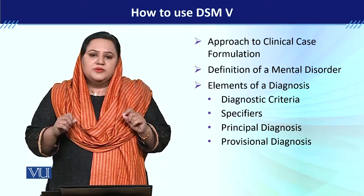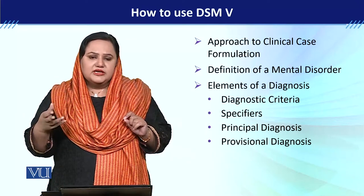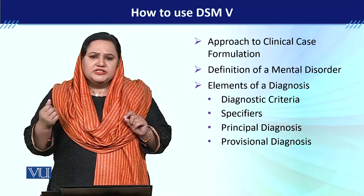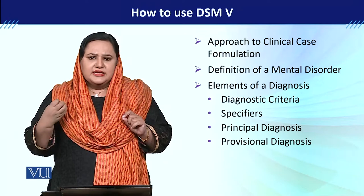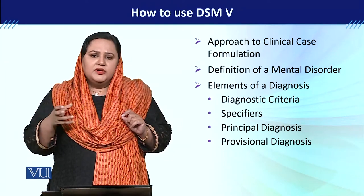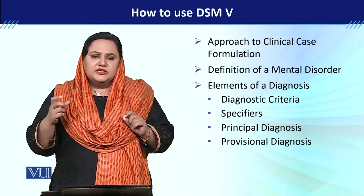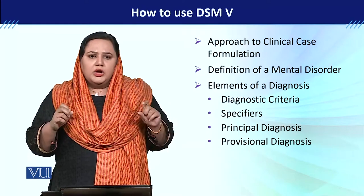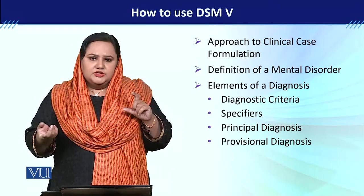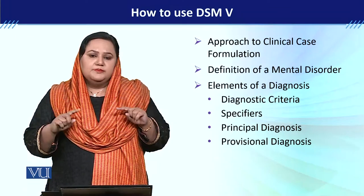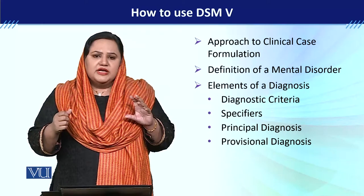Principal diagnosis refers to the main symptoms a child is exhibiting when they come to you. For example, if they are showing depression symptoms — loss of interest, hopelessness, sadness, lack of pleasure, weight loss, insomnia — but when talking with that child you also identify anxiety, then the primary diagnosis would be depression and the secondary diagnosis would be anxiety disorder. Whatever symptoms manifested first must be the principal diagnosis.